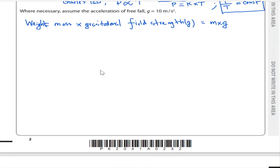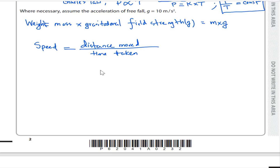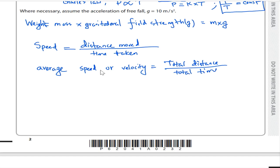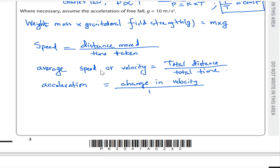Speed equals distance moved divided by time taken. Average speed or average velocity equals total distance divided by total time. Acceleration equals change in velocity divided by time taken.